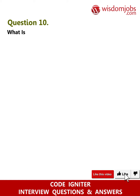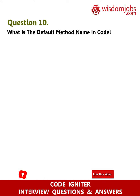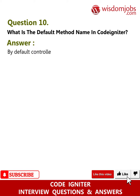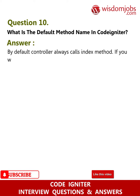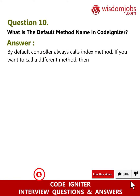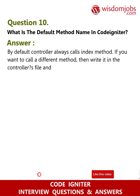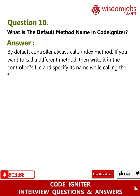Question 10: What is the default method name in CodeIgniter? Answer: By default, the controller always calls the index method. If you want to call a different method, write it in the controller file and specify its name while calling the function.